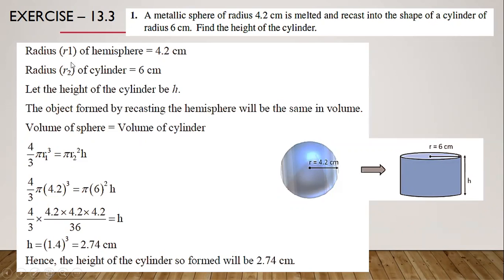Let radius of the sphere be R1 = 4.2 centimeter. Radius of the cylinder R2 = 6 centimeter. Let height of the cylinder be H. The object is formed by recasting the sphere with the same volume. So volume of sphere equals volume of cylinder: (4/3)πR1³ = πR2²H. This is the only concept for conversion of solids. Substituting R1 = 4.2 and R2 = 6, we get height H = 2.74 centimeter.